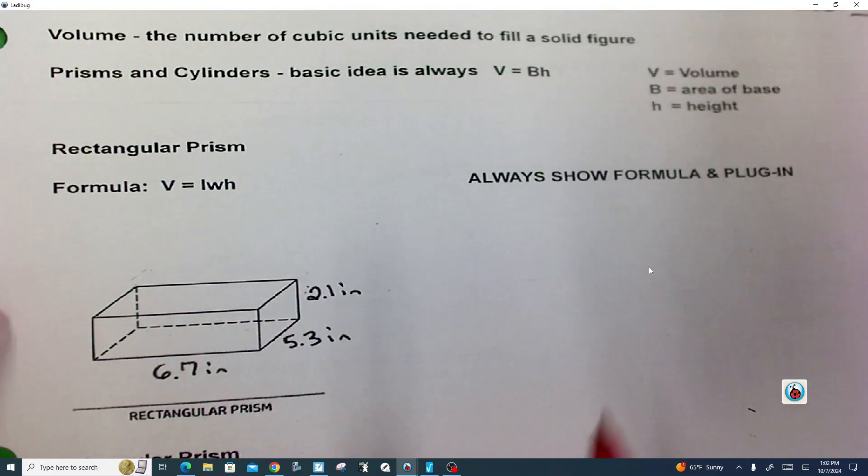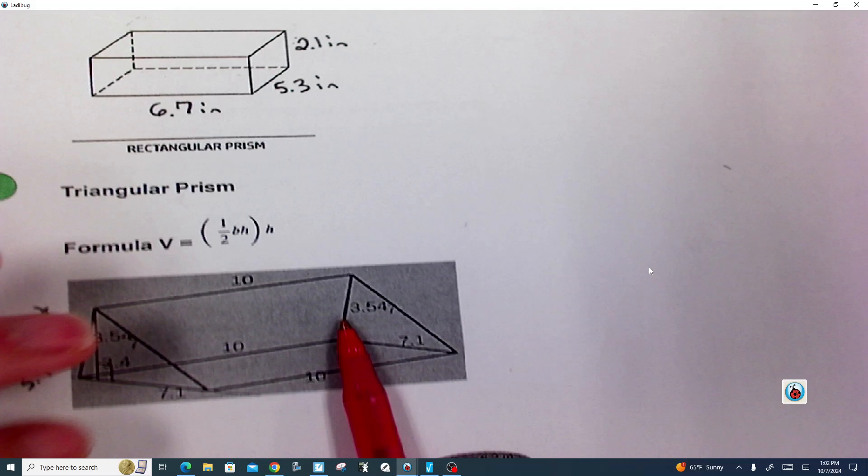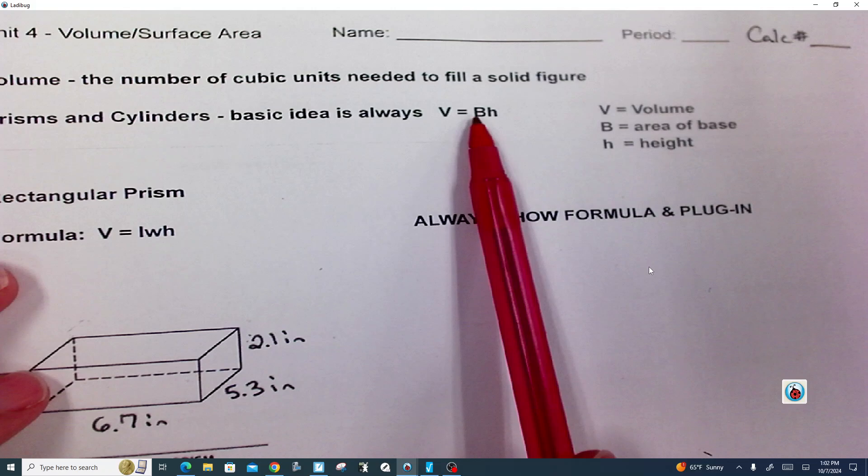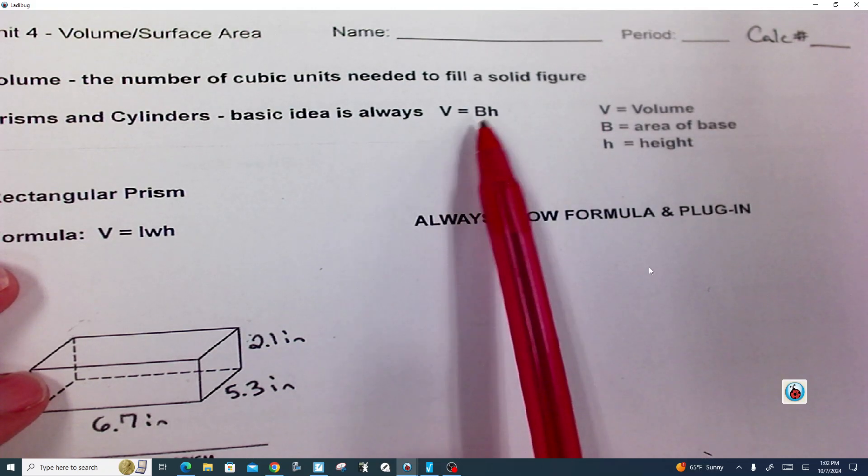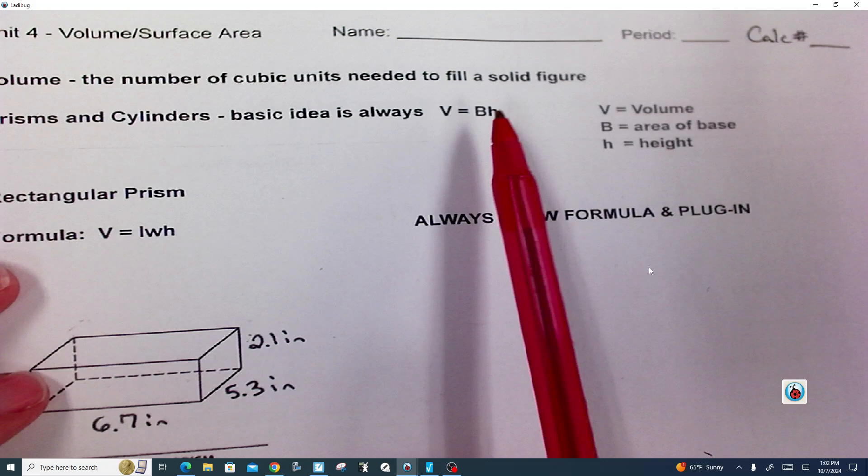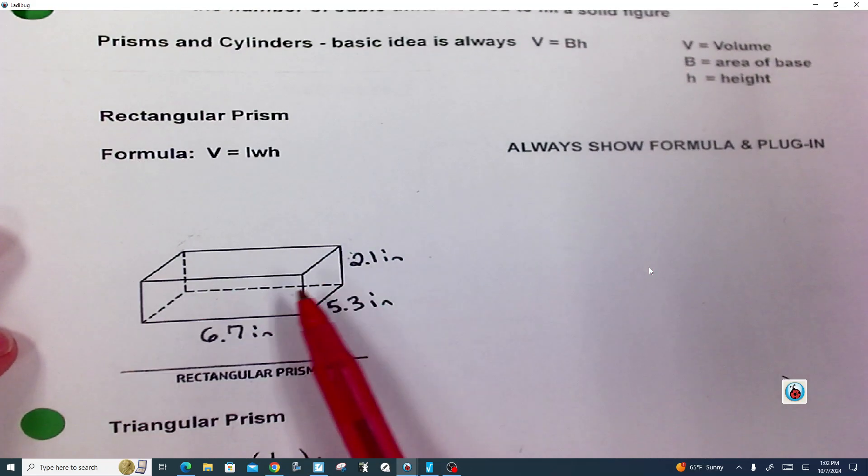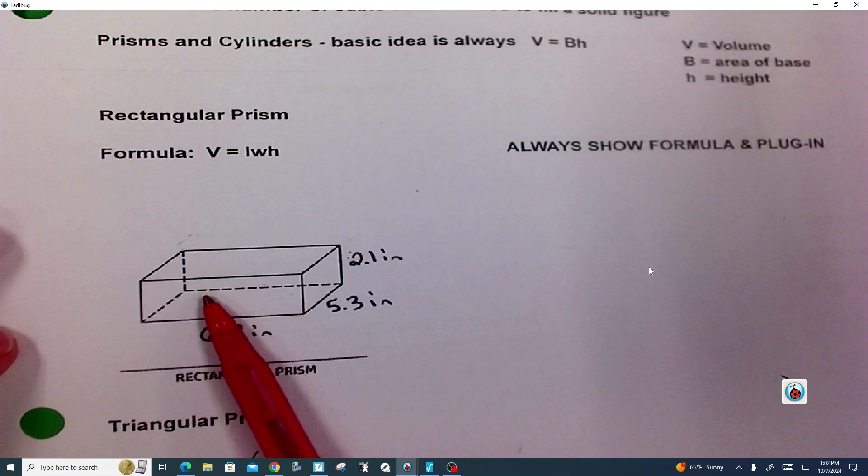The basic idea for prisms, triangular prisms and cylinders is the area of the base times the height. This is like a generic formula. All right, so let's go and take a look at this rectangular prism.